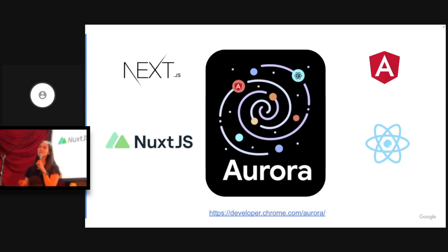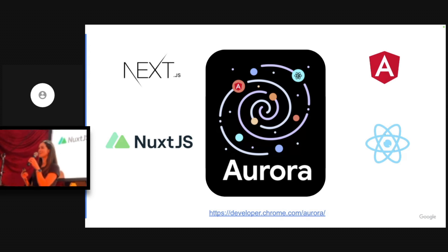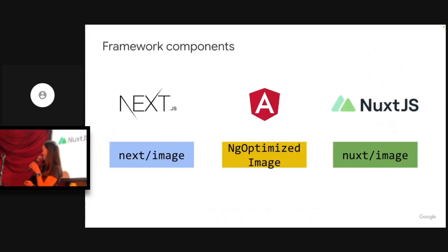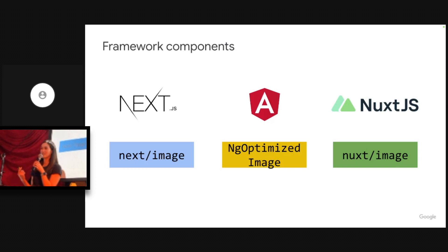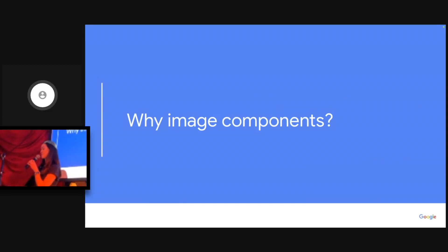In practice, this means that we partner with a bunch of different frameworks, like Next.js and Angular, to build features that help developers optimize their applications. One such set of features is our suite of image components that I'll be talking about in more detail today — our Next image, ng-optimized image, and Nuxt image components. But before I jump into those, I wanted to take a step back and explain our thinking behind image components.